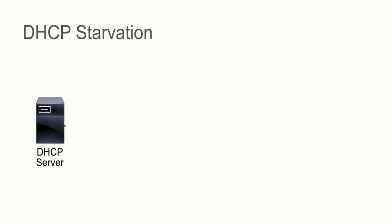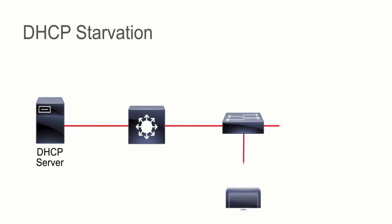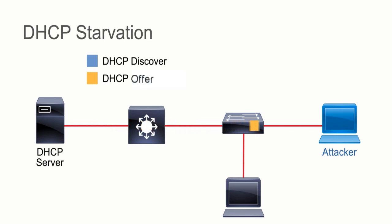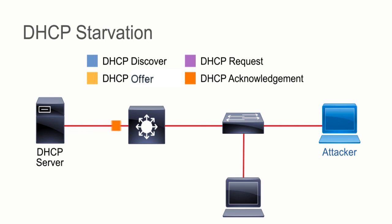In our first example of DHCP starvation, we have an attacker on the network who sends out a DHCP discover message. That DHCP discover message is met with a DHCP response from the server saying you can use this address. If the client device decides to use it, he will send a DHCP request saying yes, please give that to me, and he will get a DHCP acknowledgement saying the address is yours. That's the normal process for DHCP.